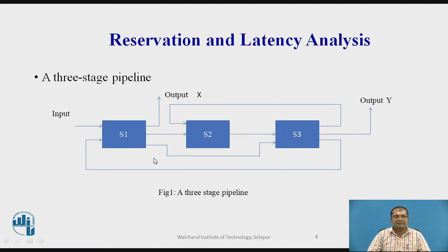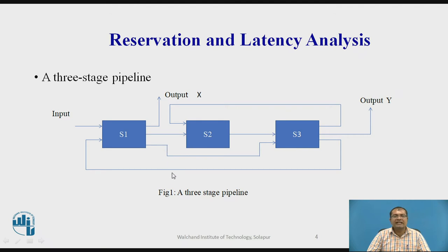Let us see the given diagram, which is a three-stage pipeline explaining its working. There are three stages total, which is why it is called a three-stage pipeline. Stage one is accepting the input. The connections between different stages are of three types: streamline connection, feed forward connection, and feedback connection.